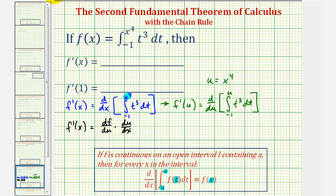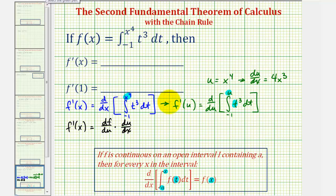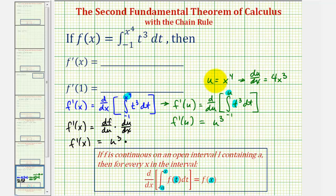We let u equal x to the fourth, which means u prime or du dx would be equal to four x to the third. Now we can find f prime of u by applying the second fundamental theorem of calculus. Remember to do this, we'll substitute u for t. So f prime of u would be equal to u to the third. Therefore f prime of x is equal to df du, or f prime of u, which would be u to the third, times du dx, which is four x to the third.